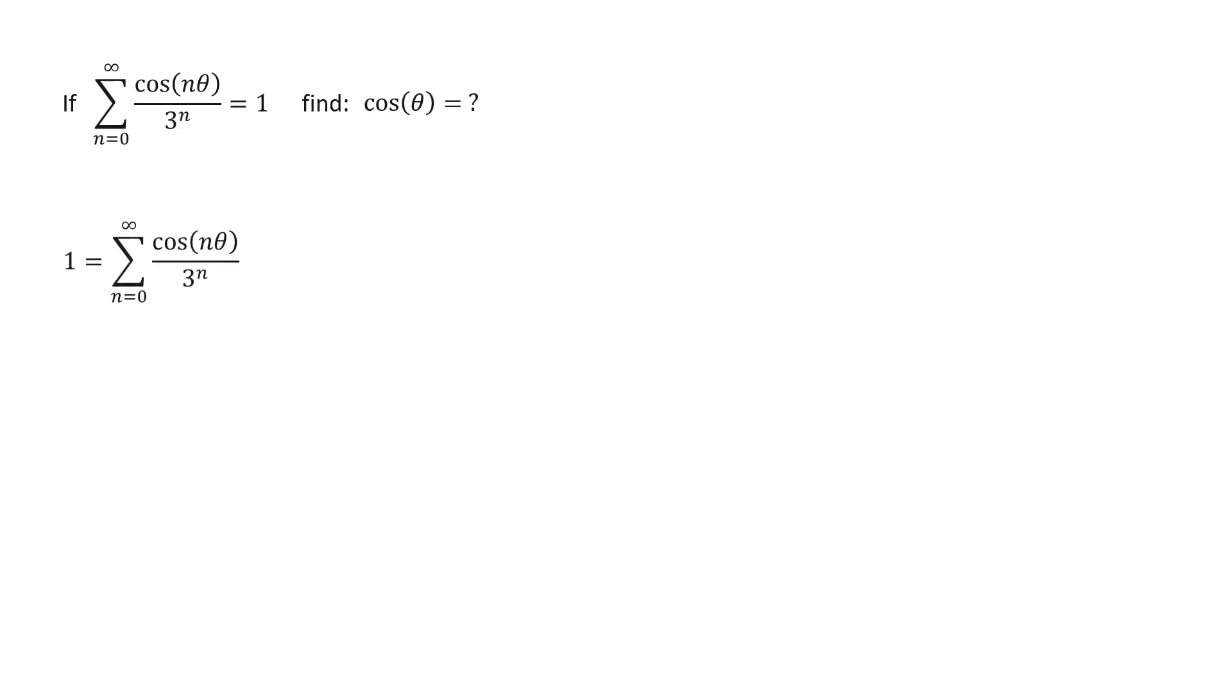First, we write it into this way. Recall Euler's formula. So we write the cosine function as the real part of the exponential function. Now we plug in to replace the cosine term.